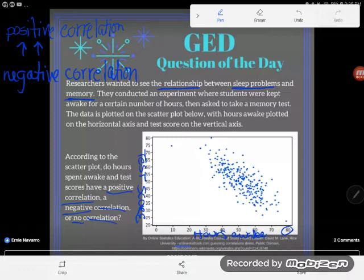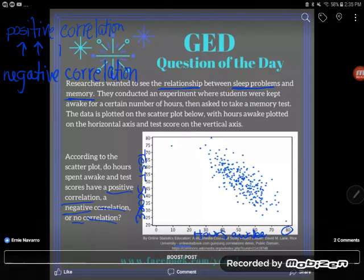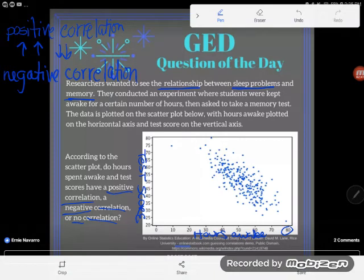A negative correlation doesn't mean they both go down at the same time. Don't get that mistaken because if the two things go down at the same time, they also go up at the same time. So that's another example of positive correlation. If they're both going down at the same time, they're still positively correlated. They have the same kind of relationship.